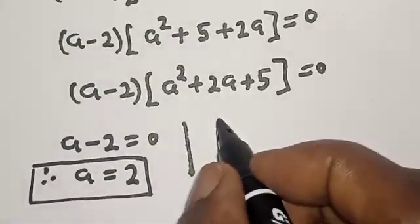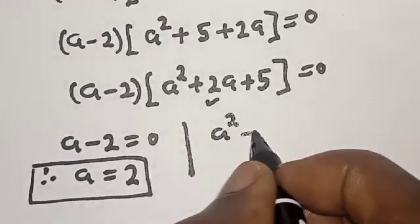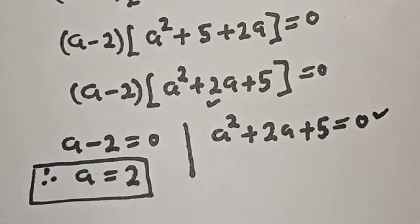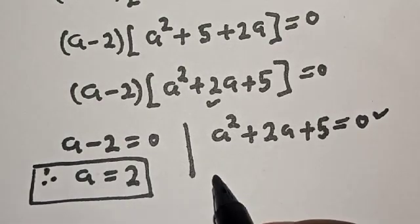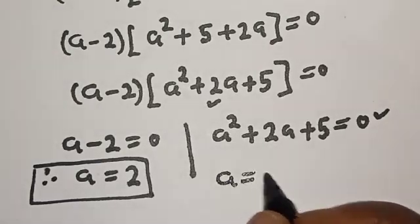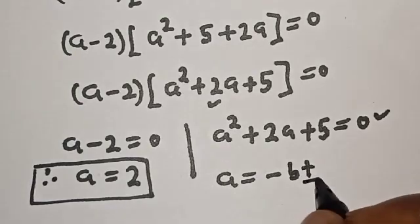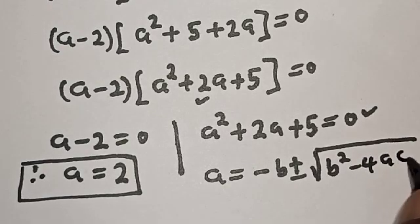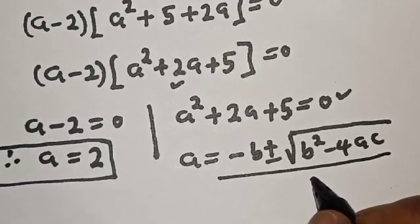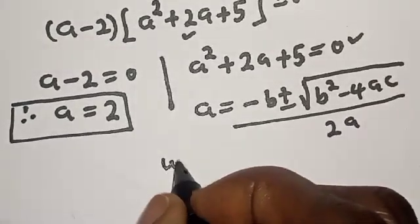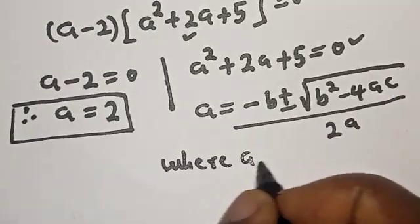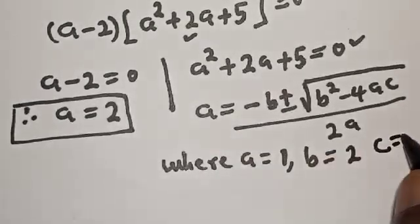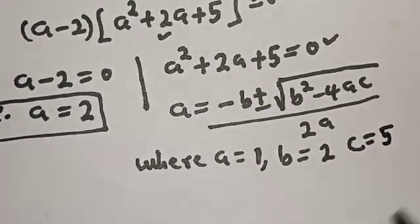The second case is a squared plus 2a plus 5 equals zero. This is a quadratic equation which can be solved using the quadratic formula: a equals negative b plus or minus square root of b squared minus 4ac, all over 2a. Here, a equals 1, b equals 2, and c equals 5.